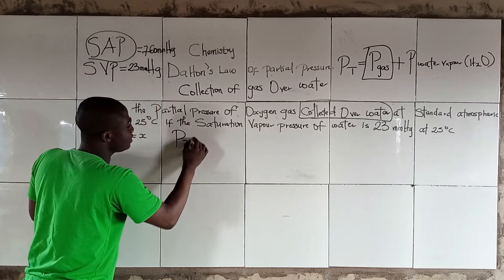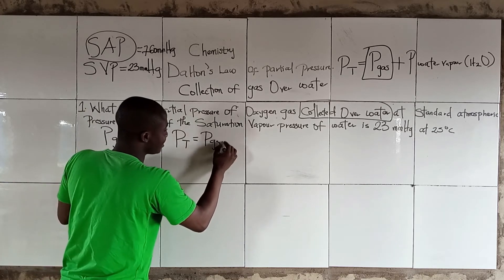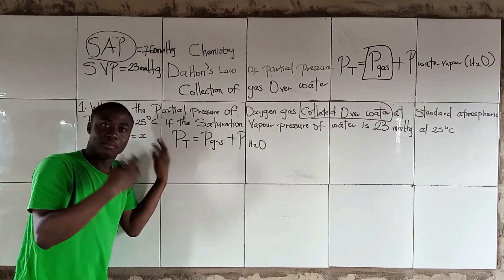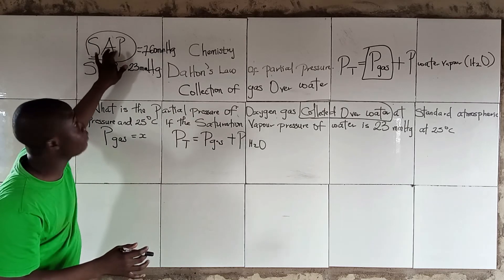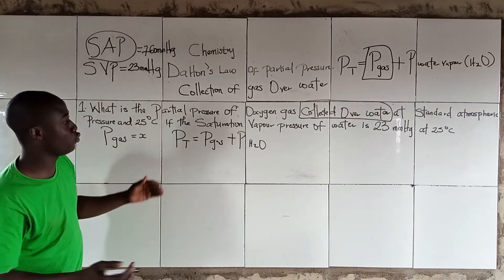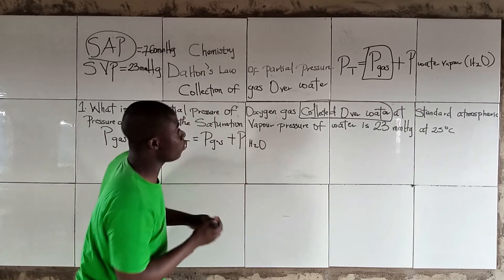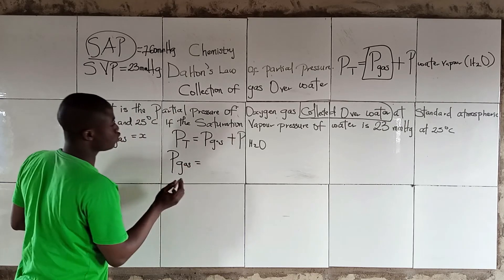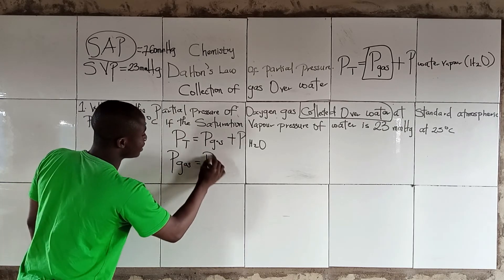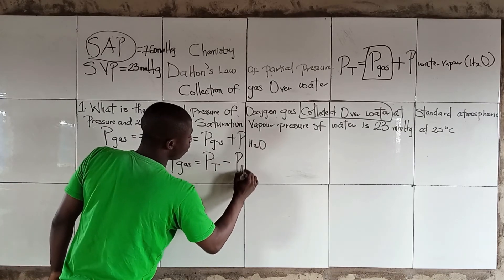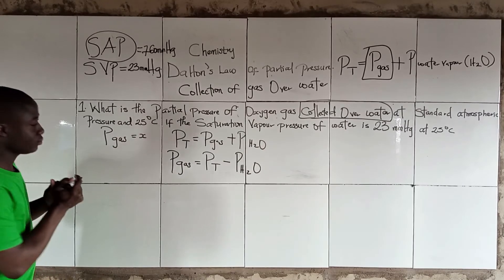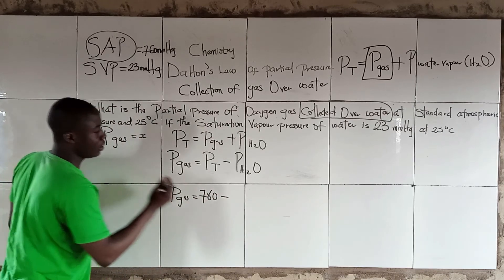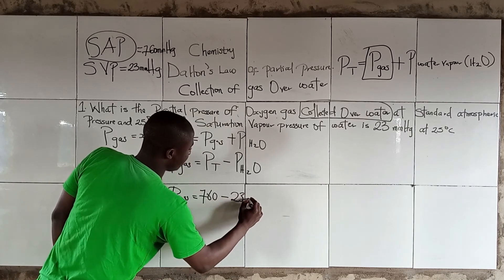We apply our formula: Pt = P_gas + P_water_vapor. Pt is the standard atmospheric pressure, the total, which is 760 mmHg, and P_water_vapor is 23 mmHg. Making P_gas the subject, we get P_gas = P_total − P_water_vapor, which is 760 mmHg − 23 mmHg.